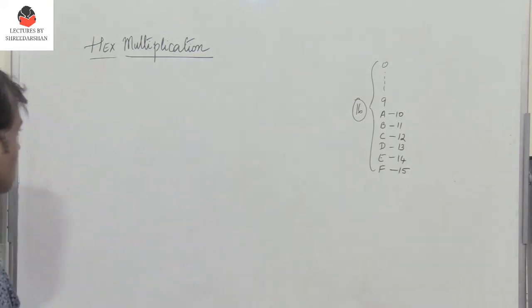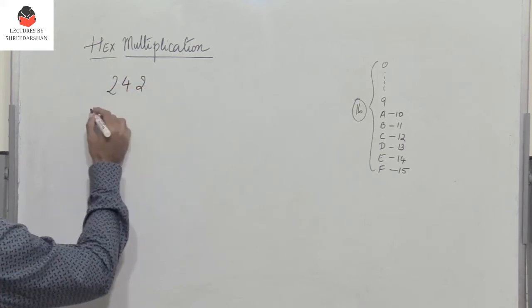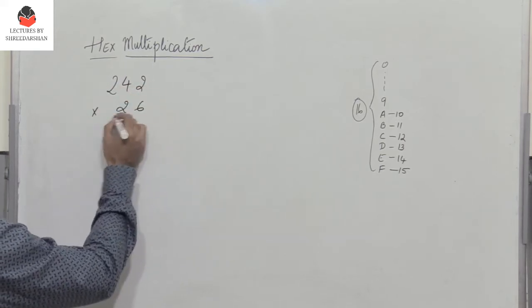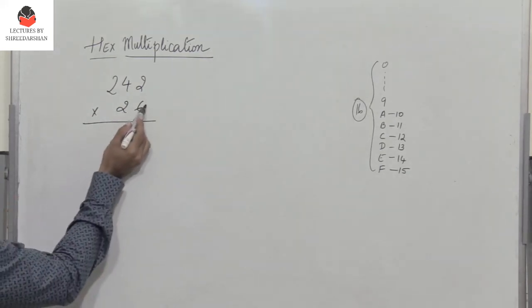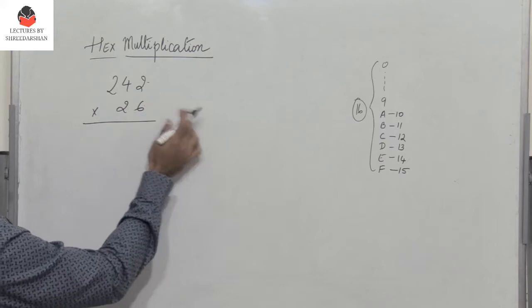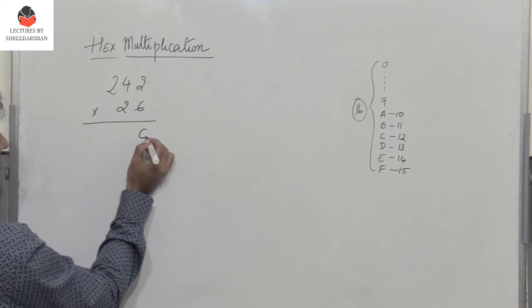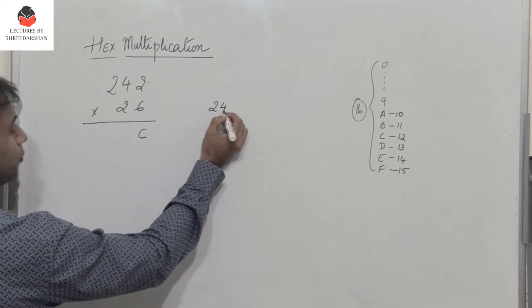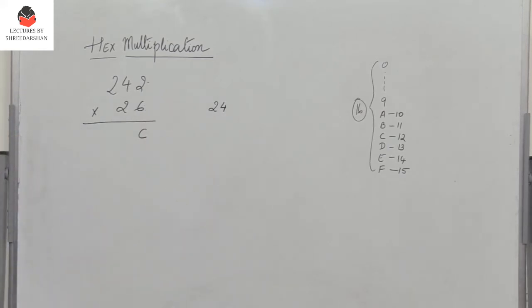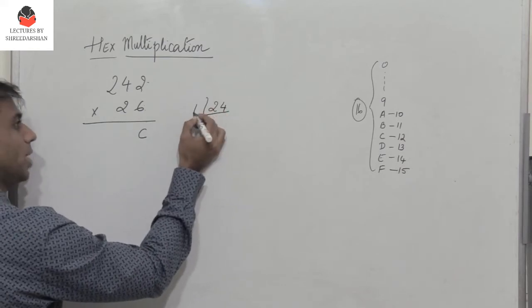Let's take an example. Let's say I need to multiply the two numbers 242 into 26. So now I have 6 into 2 is 12. So what is 12? 12 is C. Now 6 into 4 is 24. So 24 is a number greater than 15. So what do we do? We have to convert it into hex format.